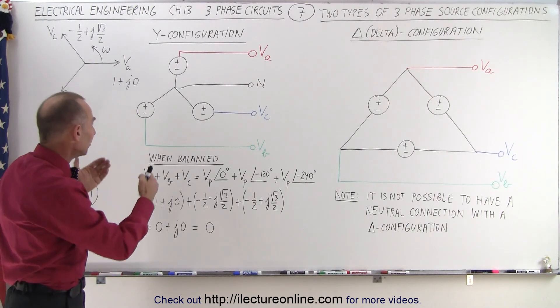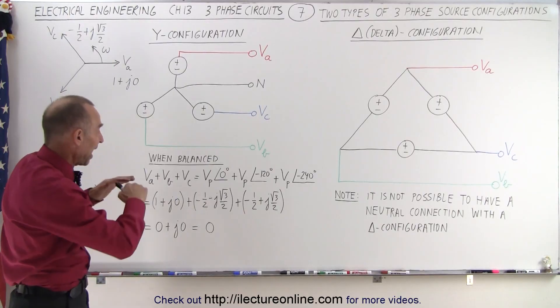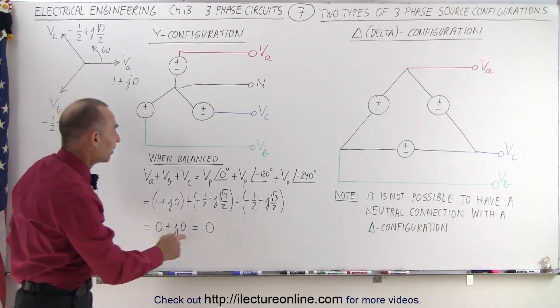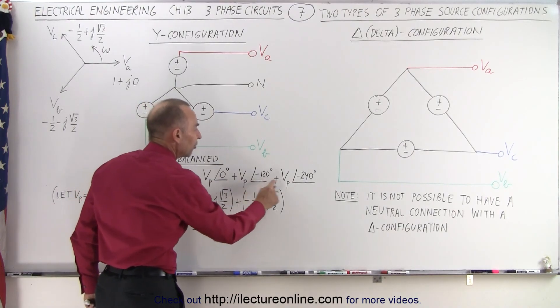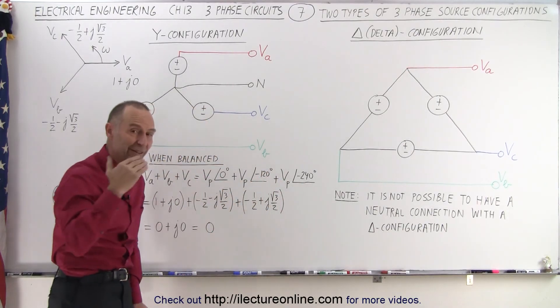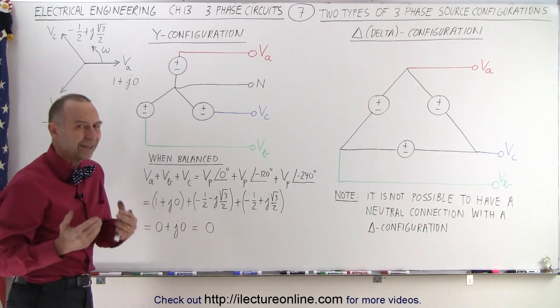Now, when they're perfectly balanced, and that's the goal for a three-phase system, is to have everything perfectly balanced, so that the phase voltages are exactly the same, only difference is a phase difference, and of exactly 120 degrees, then when we add up all the voltages, let's see what happens.